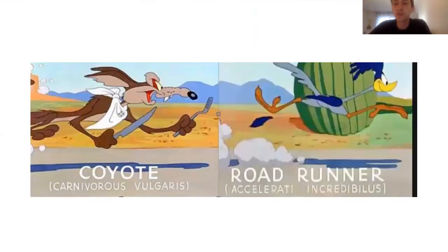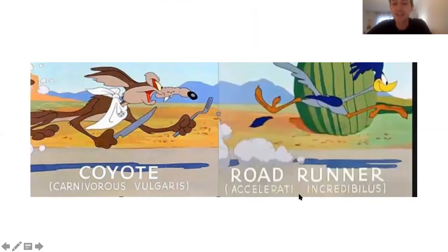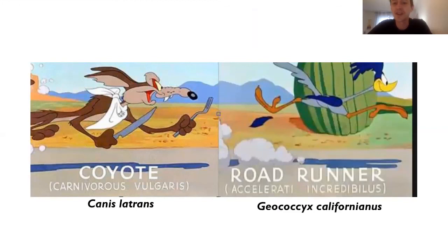Just for fun: if you've seen the old Roadrunner cartoons, they would always introduce the coyote — who chases the roadrunner trying to eat him — with their genus and species. With fake Latin: 'carnivorous vulgaris' and 'accelerati incredibilis.' Those are made-up words, just a joke. What they actually are, because these are real animals: a coyote's actual genus and species is one thing, and for a roadrunner it's another.